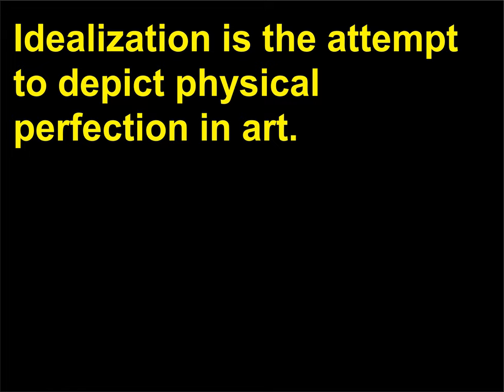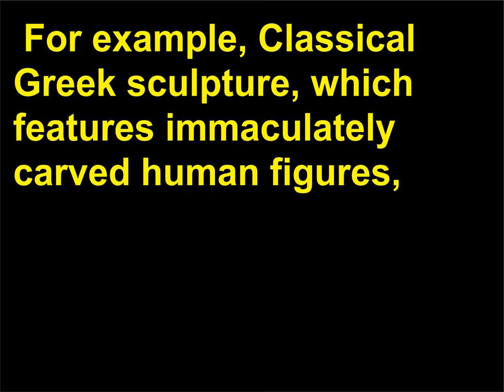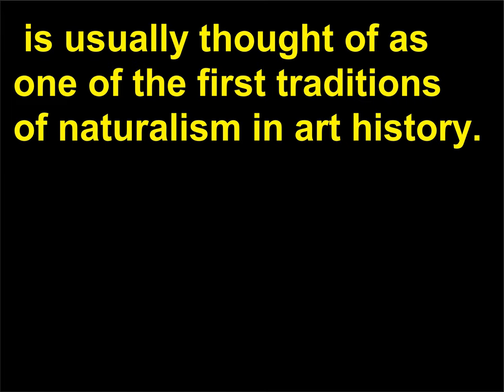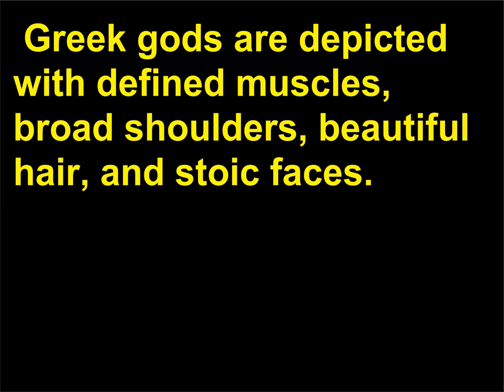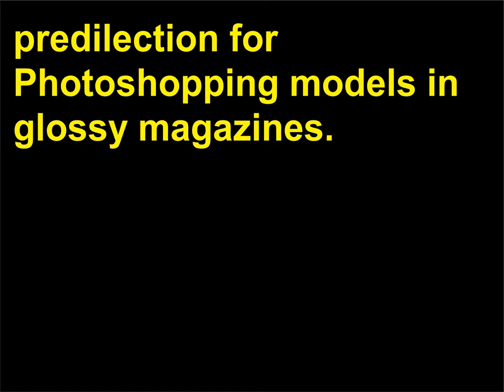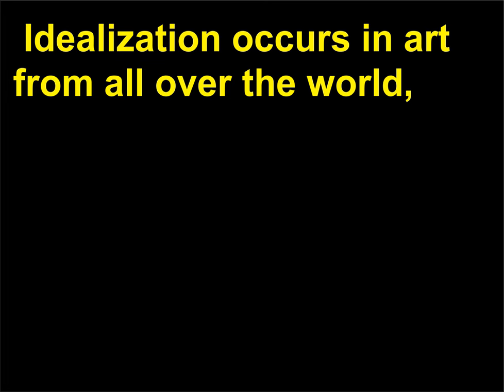What is idealization? Idealization is the attempt to depict physical perfection in art. For example, classical Greek sculpture, which features immaculately carved human figures, is usually thought of as one of the first traditions of naturalism in art history. Upon closer inspection, however, many examples of classical Greek sculpture look overall quite a bit better than average — Greek gods are depicted with defined muscles, broad shoulders, beautiful hair, and stoic faces. This is arguably similar to our contemporary culture's predilection for photoshopping models in glossy magazines. Idealization occurs in art from all over the world, and different cultures emphasize different features in their attempts to achieve perfection.